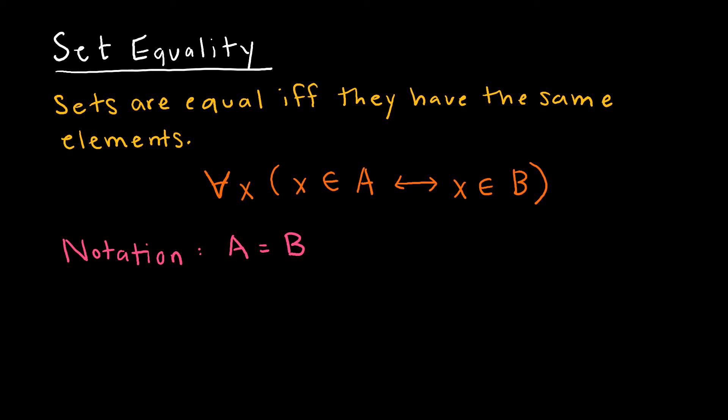First notice the way that this is notated. I'm saying for all X, X is an element of A if and only if X is an element of B.